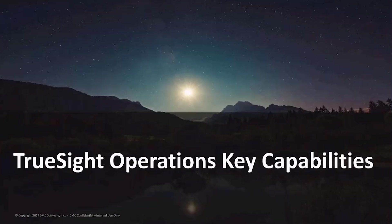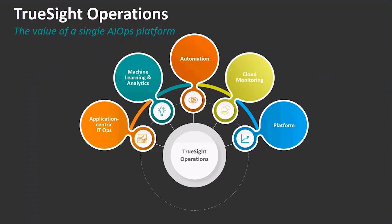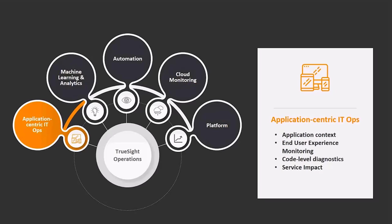Now let's dig into the key capabilities provided by TruSight Operations. I've broken these capabilities down into five key areas: application-centric IT ops, machine learning and analytics, automation, cloud monitoring, and the platform itself. Starting with application-centric IT ops — as I mentioned when describing the evolution of monitoring — IT operations is no longer simply about up/down detection.